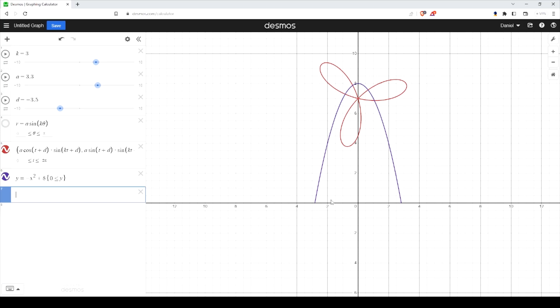And I want to flatline x is zero, or y is zero rather. And I want to know where this intersects, so I grab a number.